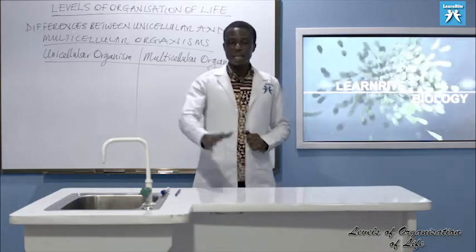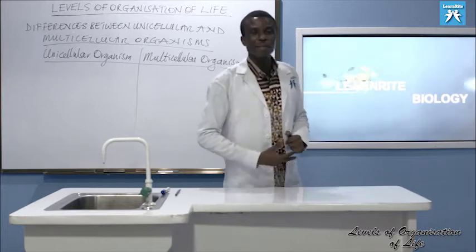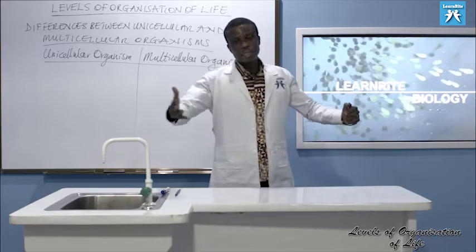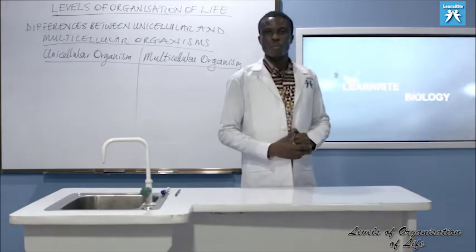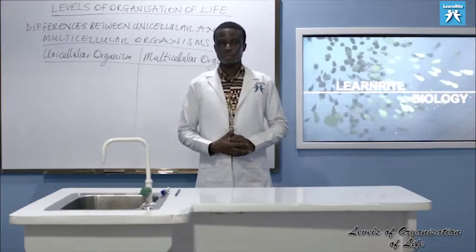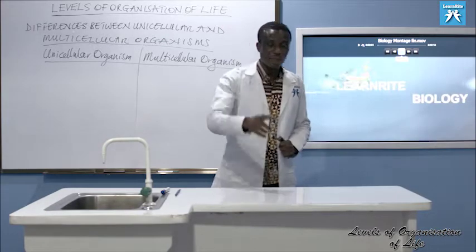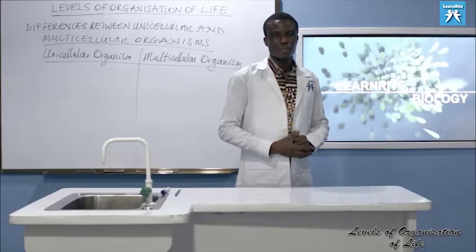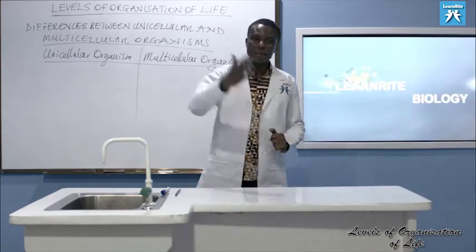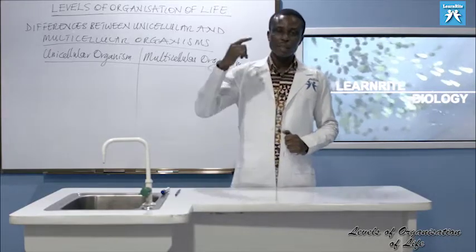Hydra and obelia, for instance — typical examination specimens — have a level of organization at the tissue level. Storage organs such as bulb, rhizome, and corm have a level of organization at the organ level. The majority of animals and plants have a level of organization at the organism level.